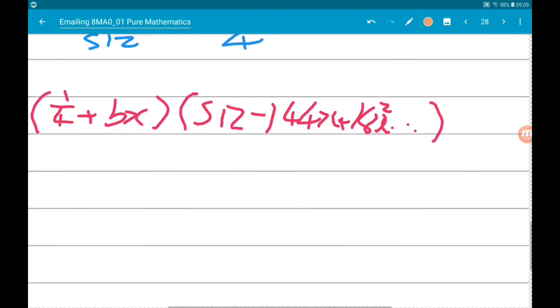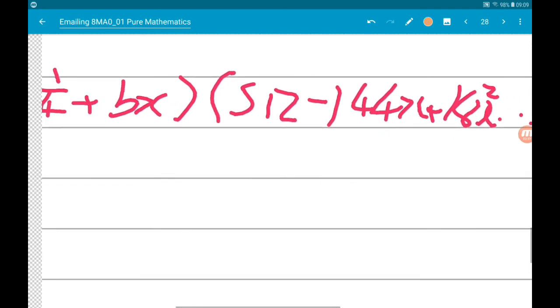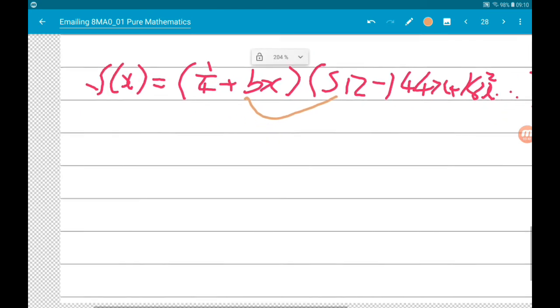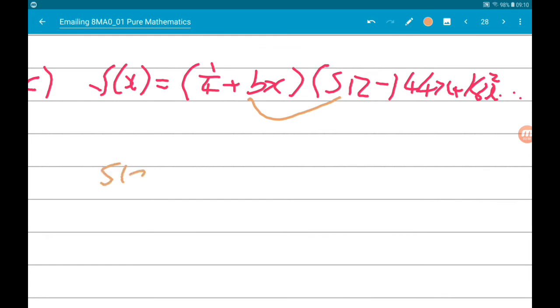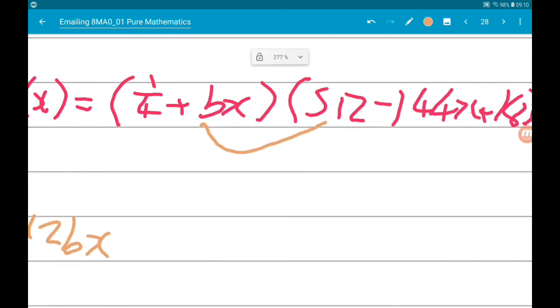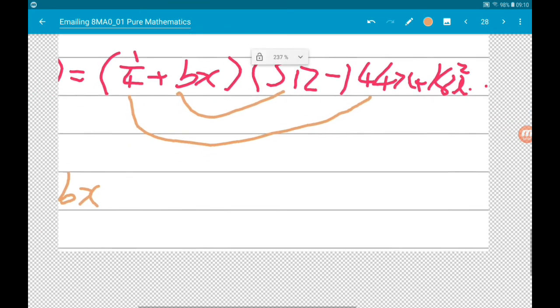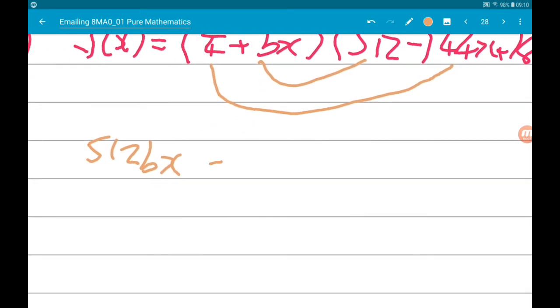So we're going to get bx times 512, so 512bx, and we're also going to get one quarter times minus 144x. So minus quarter times 144x, and we know that has to be 36x.